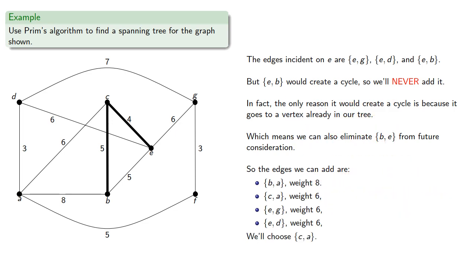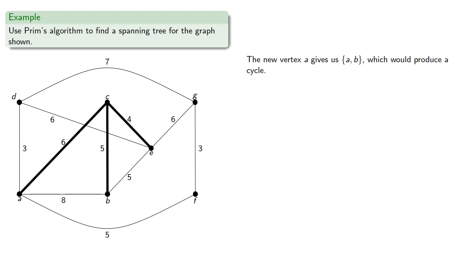And we'll choose the minimum weight edge CA. The new vertex A gives us the edge AB, which would produce a cycle, so we'll never include it. And we can also eliminate BA.